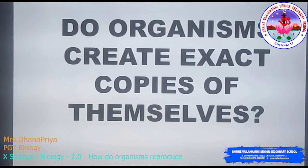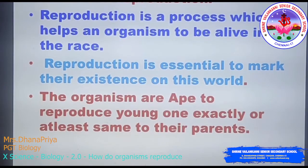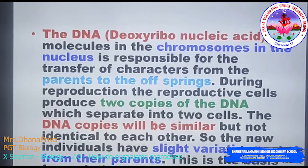Reproduction also facilitates evolution, because variation comes through reproduction over several generations. Organisms create copies of themselves — reproduction helps an organism stay alive in the race and mark their existence. The DNA molecule in the chromosomes in the nucleus is responsible for transferring characters from parent to offspring. During reproduction, reproductive cells produce two copies of DNA which separate into two cells.